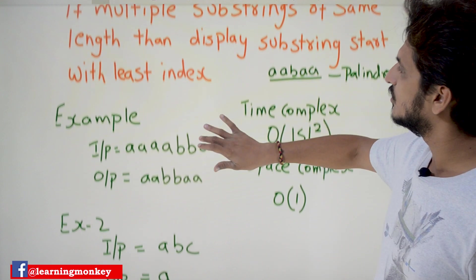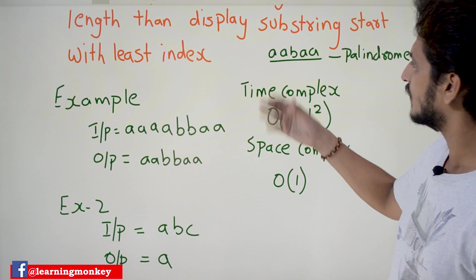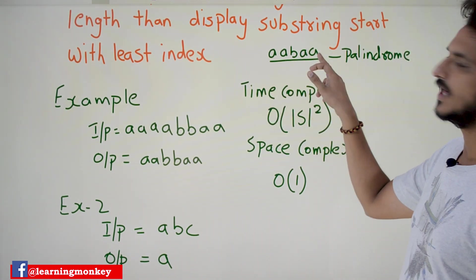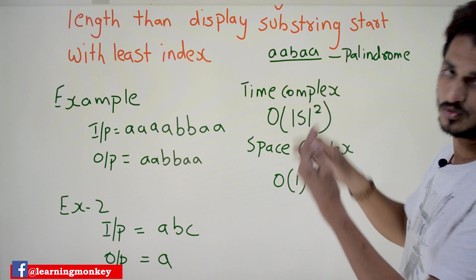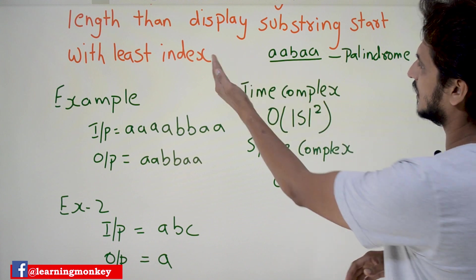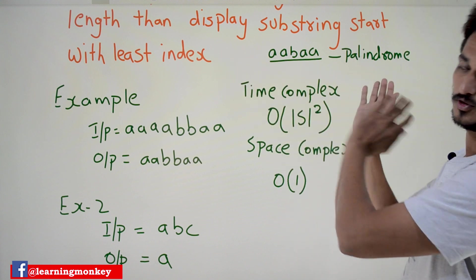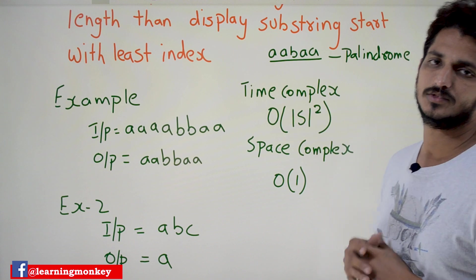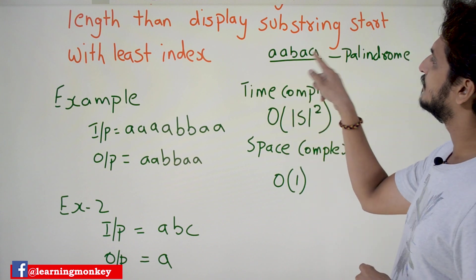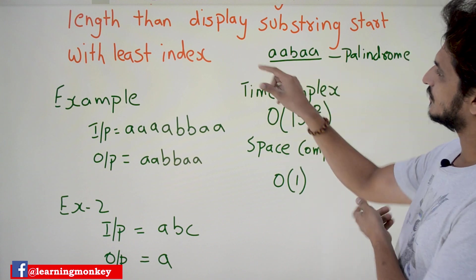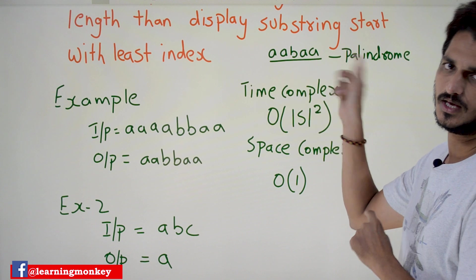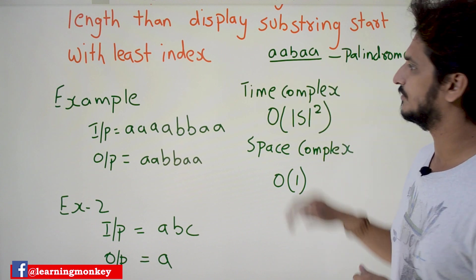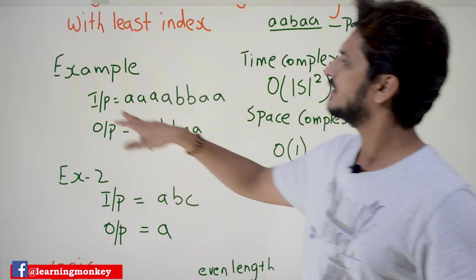With an example you will get clarity. You already know our assumption — palindrome means AABAA. If you look at this string from the beginning or if you reverse the string, you will get the same output. AABAA reversed is still AABAA. This is what we call a palindrome.